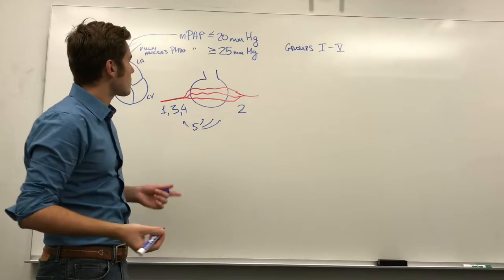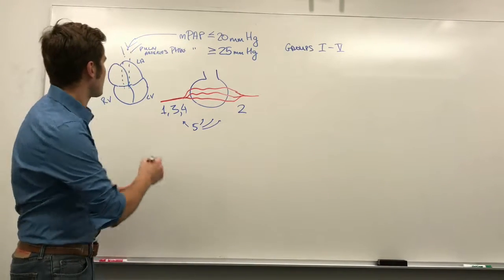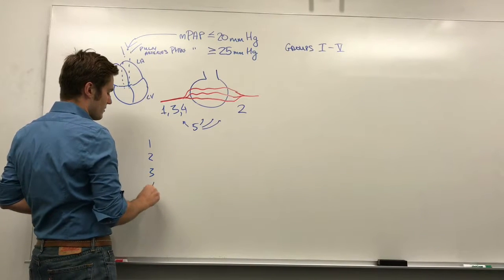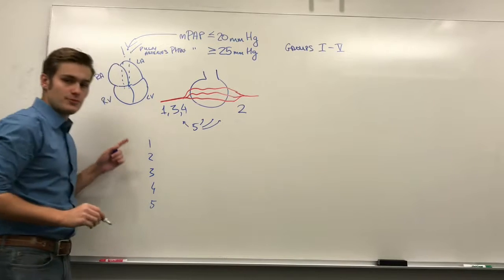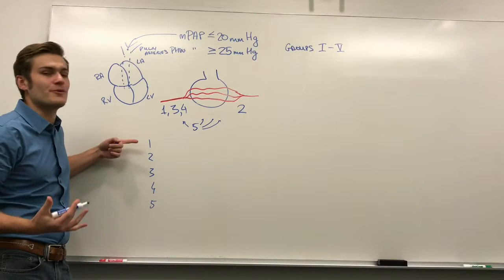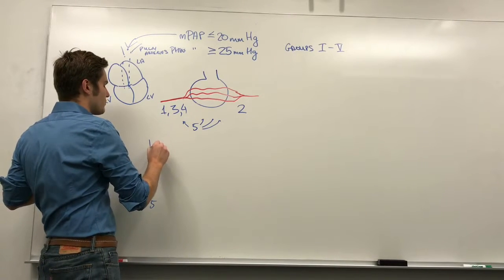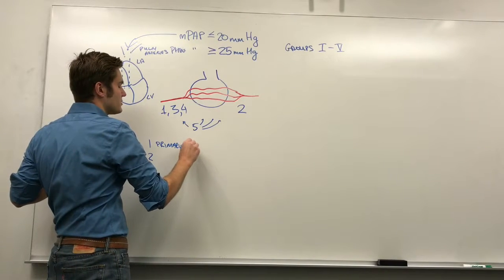So, how are these groups, what are these groups specifically? Going down the list, group 1 is going to be the number 1 pulmonary hypertension. It's pulmonary hypertension that kind of occurs by itself. This is going to be primary pulmonary hypertension.